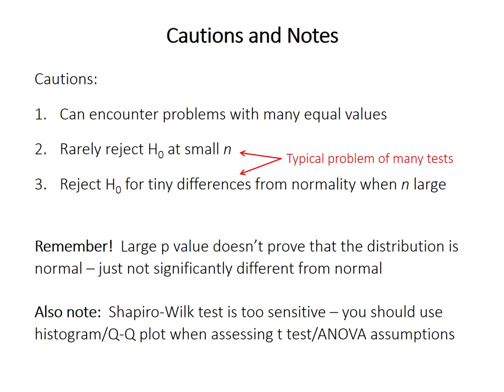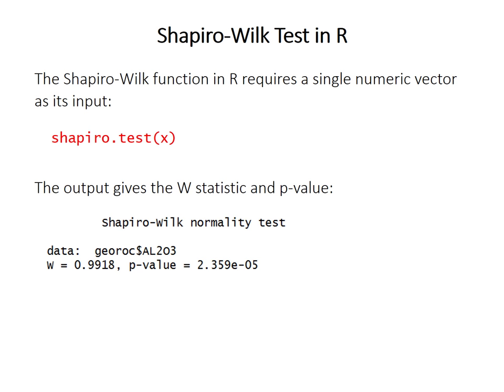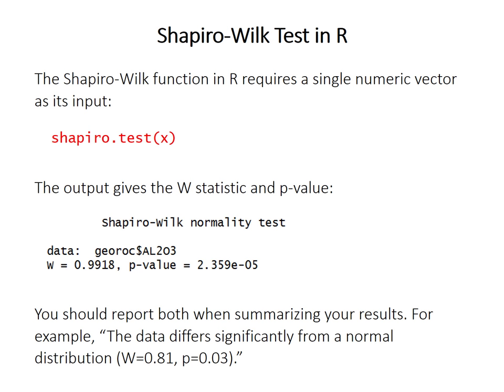The Shapiro-Wilk test function in R, shapiro.test, is about as simple as R functions get. You just provide it a single numeric vector as the one argument, x. The output is minimal: it gives you the test name, the W statistic, and the p-value. You should report both of those values when summarizing your results, and make sure to also mention that you performed a Shapiro-Wilk test, since there are several different tests for normality.